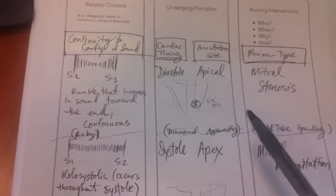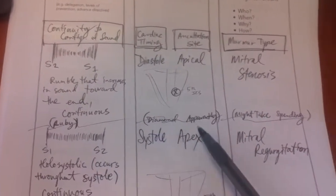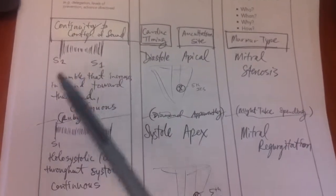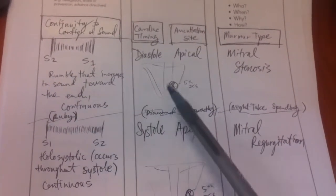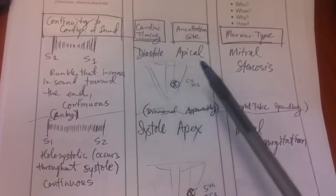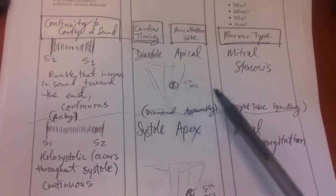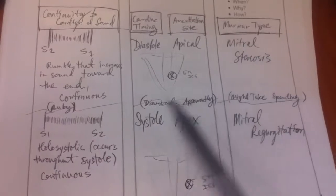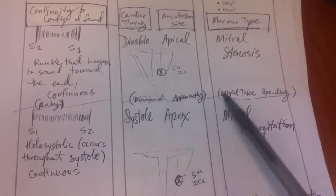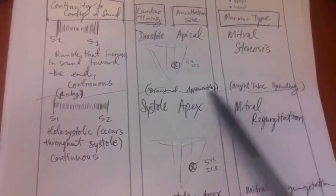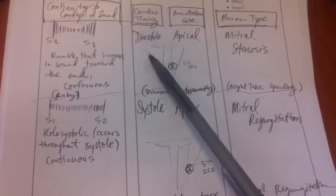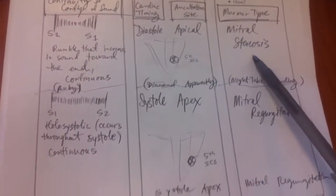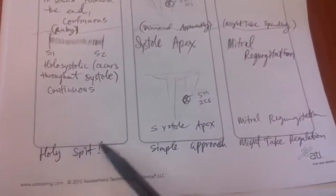To review: 'Ruby Diamonds Apparently Might Take Spending' — rumble sounds heard during diastole at the apical site equals mitral stenosis. And 'Holy Spit The Simple Approach Might Take Regulation' — holosystolic sound at the apex during systole equals mitral regurgitation.